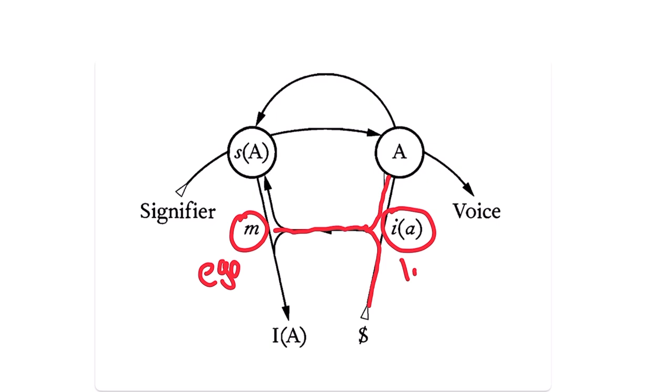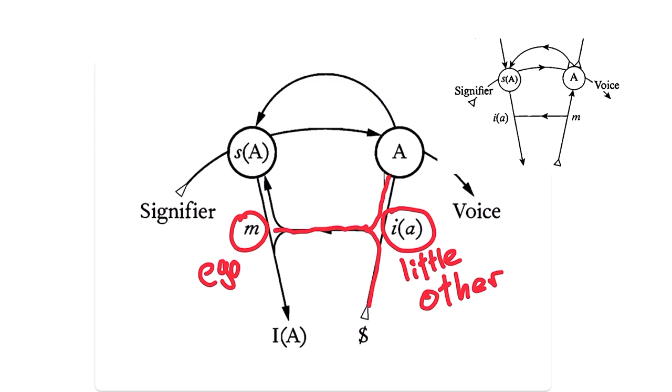The imaginary relation consists of the little other and its mirroring counterpart, the ego. As briefly indicated in the previous video, these terms are at times flipped, and it would seem that Lacan did that intentionally to illustrate the transitivity that marks the relation.